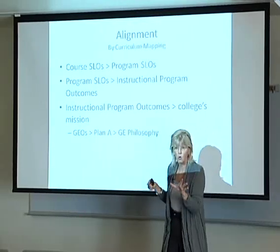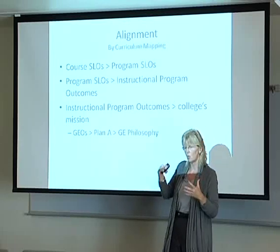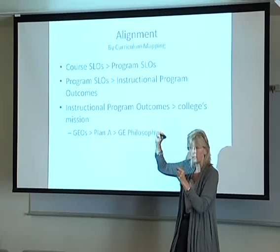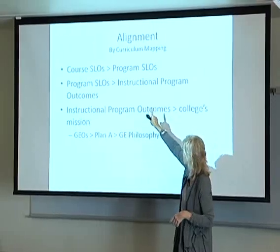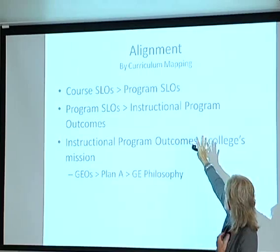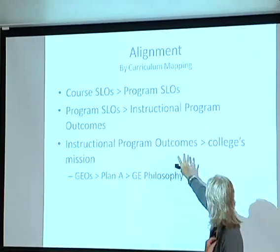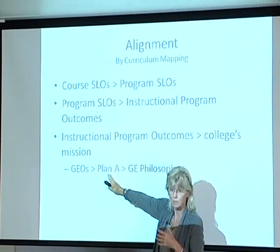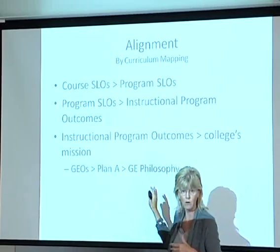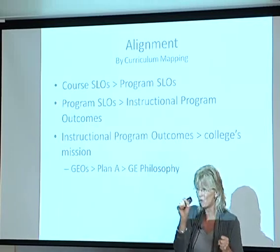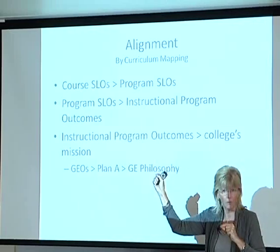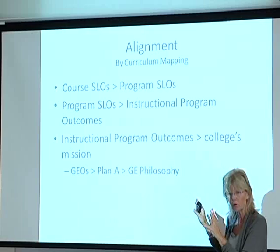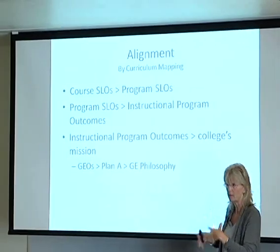One way we're going to align — once we get our program level outcomes — is through something called curriculum mapping, so we can trace the alignment of all the courses and programs together. How do your program SLOs link to the college's instructional program outcomes, and how do those outcomes lead to the college's mission? At the institution level, we have the general education outcomes, Plan A courses, and GE philosophy already aligned. There's always a logical thread linking things together — we don't want things floating out making no sense. We're hoping to get curriculum mapping started this year as we get things up and running.